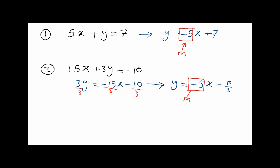Notice that both slopes are equal. When we have such a situation where M1 equals M2 for two different equations, we can say that line 1 and line 2 are parallel. Any two lines with equal slopes are parallel lines.